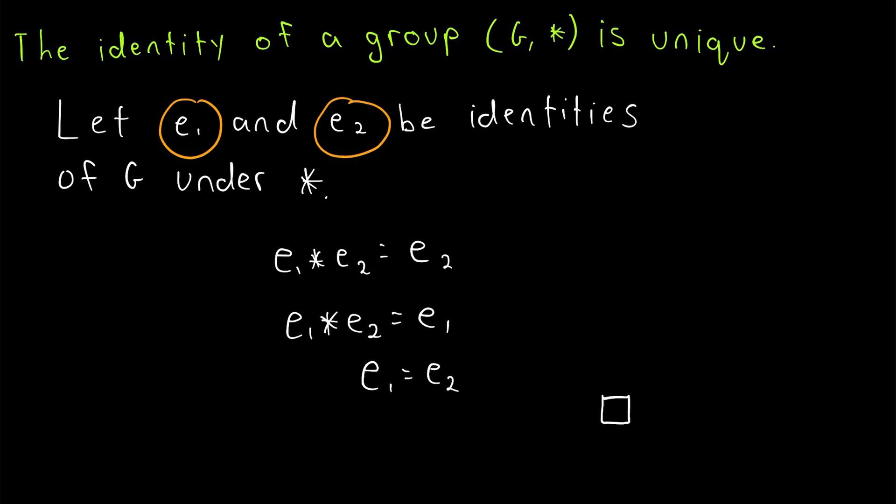If we give two different names, two identities of a group, we've shown that, in fact, those two names are referring to the exact same element, the unique identity of the group.